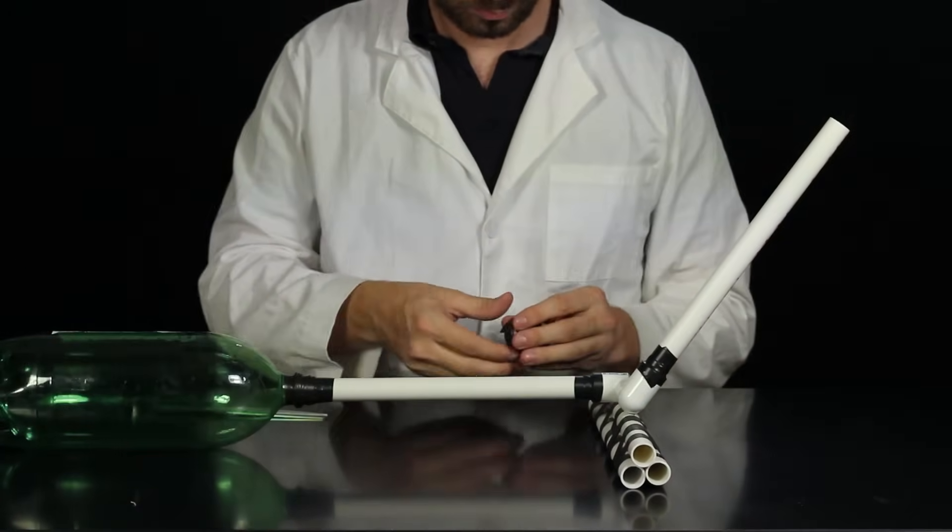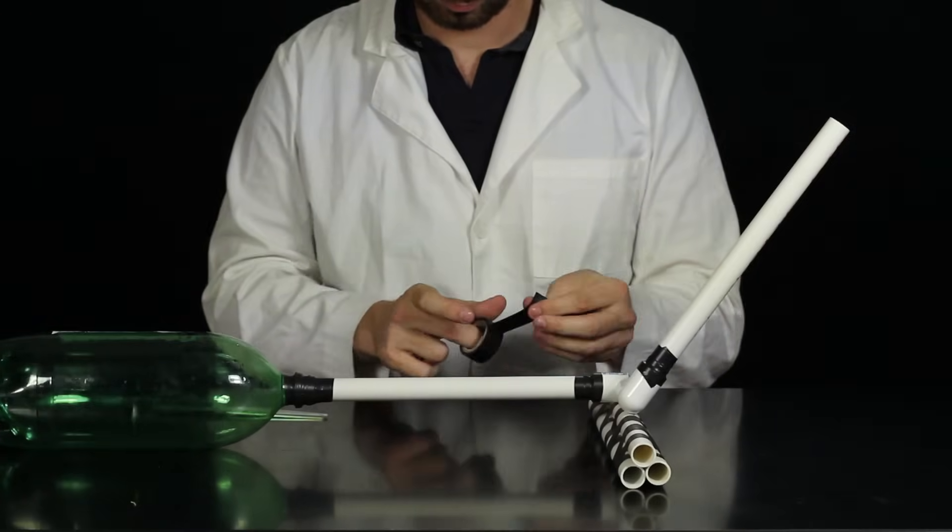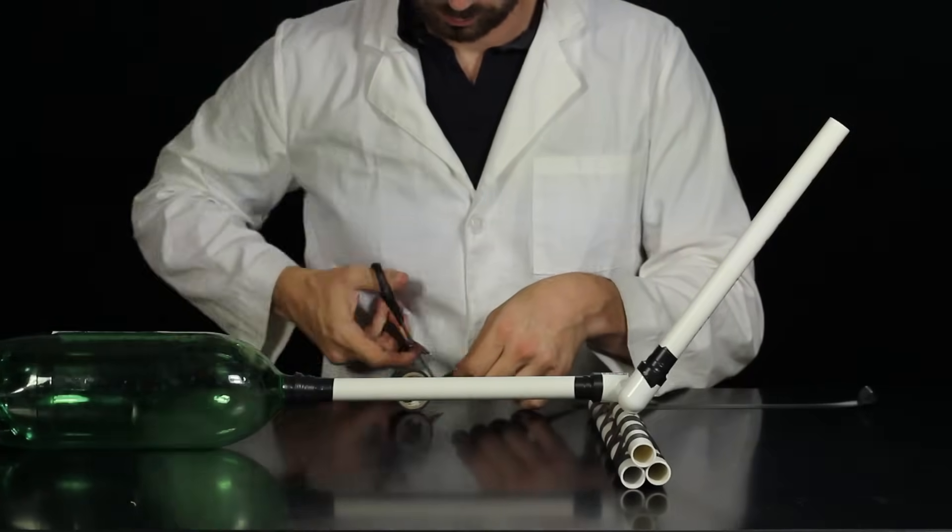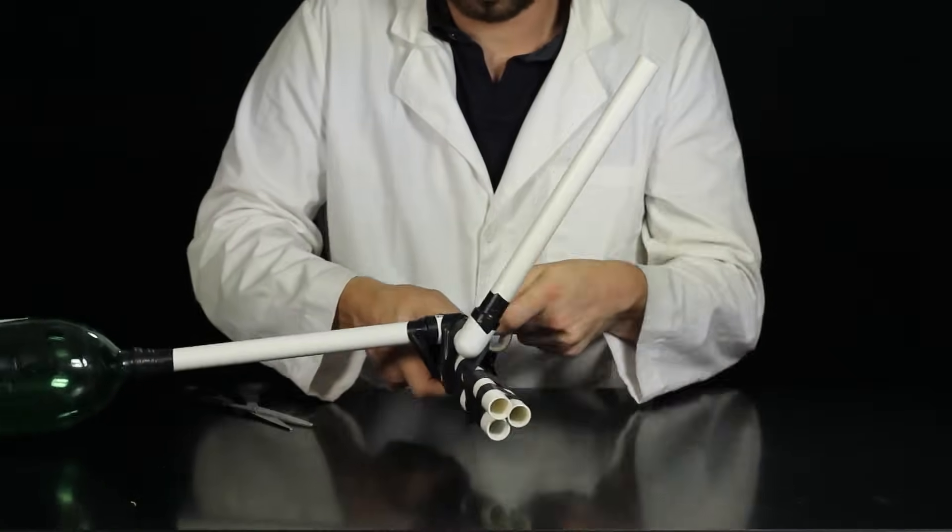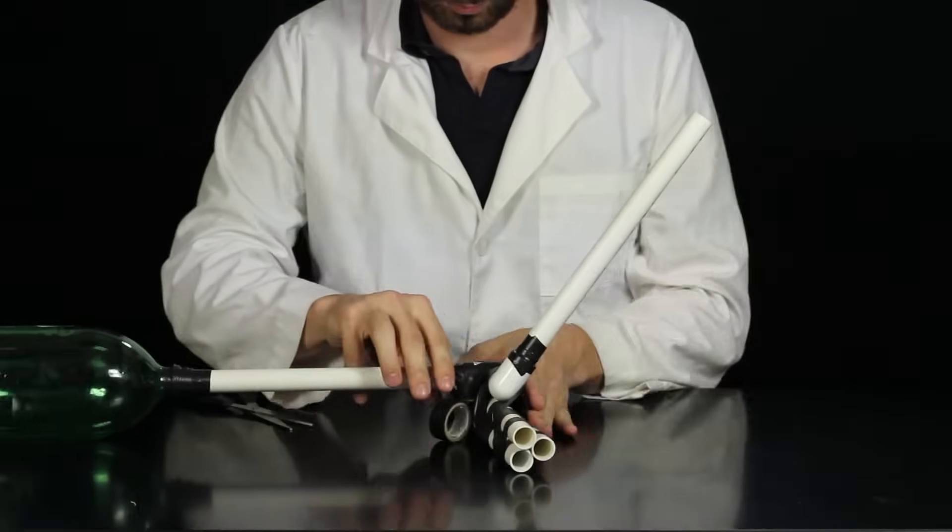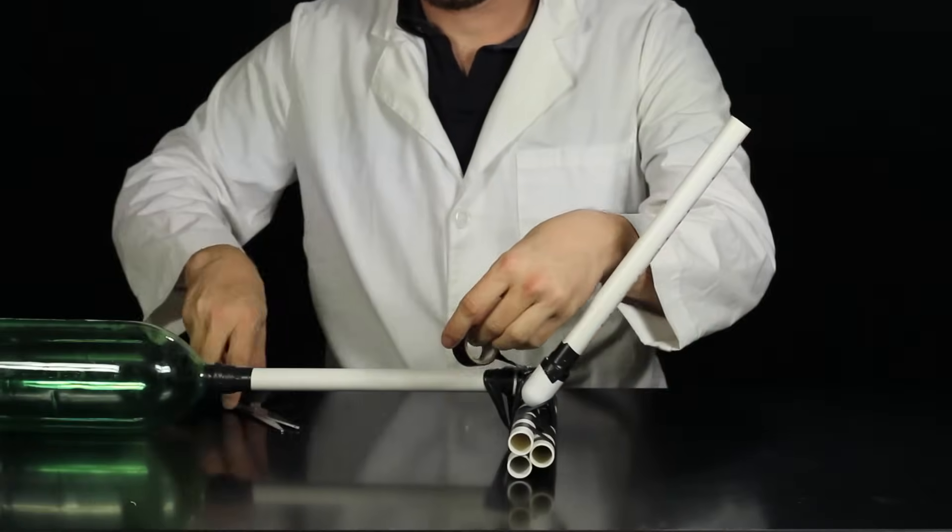The final step in the process is taping the launcher to the base we made in step one. Once the tape is secured, your rocket launcher is ready to fire.